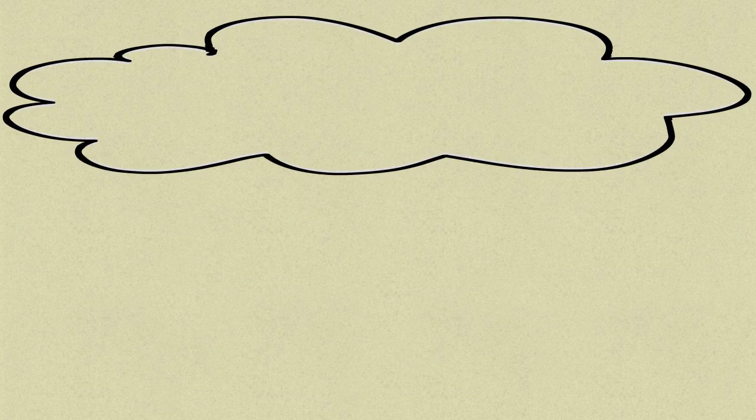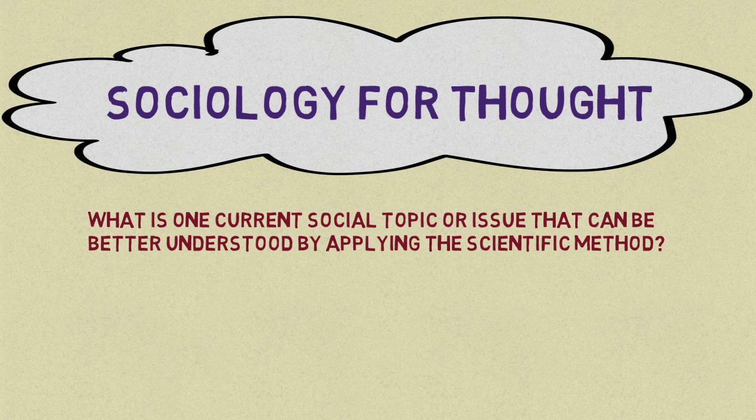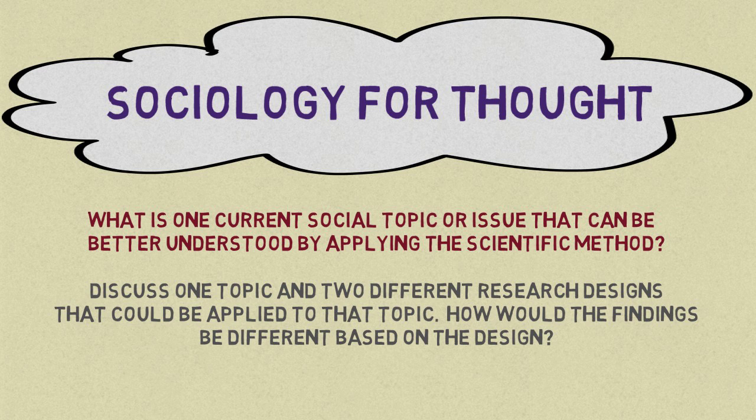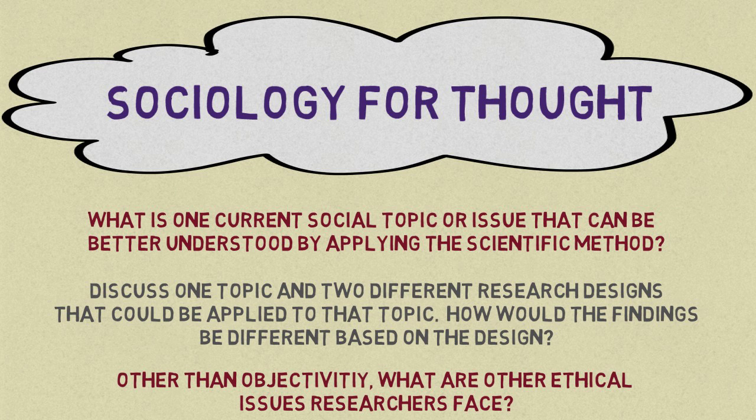So, now that you know about the scientific research process, what is one current social topic or issue that can be better understood by applying the scientific method? Discuss one topic and two different research designs that could be applied to that topic. How would the findings be different based on the design? And other than objectivity, what are other ethical issues that researchers face?